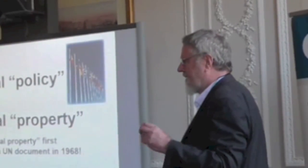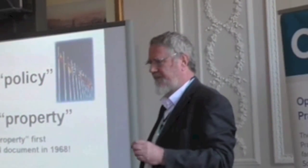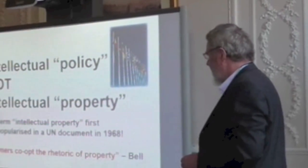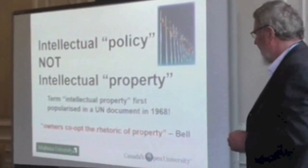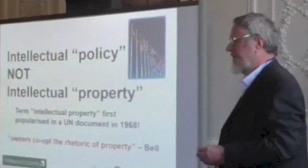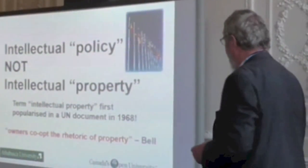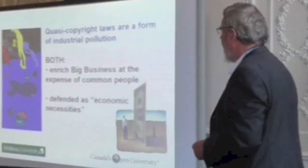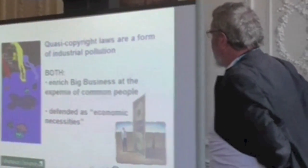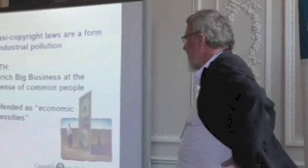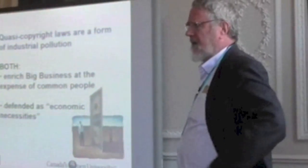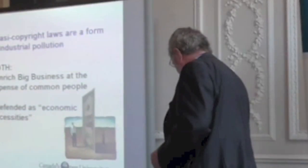What happened is we basically agreed with the European view, and the European view of copyright is quite different. What happened in the 1960s is the owners — the big publishers — co-opted the rhetoric of property and started to use the term 'property' for intellectual policy. These are quasi-copyright laws, a form of industrial pollution. They enrich big business at the expense of common people, and they're defended as economic necessities: that to have the economy going, we must have copyright.